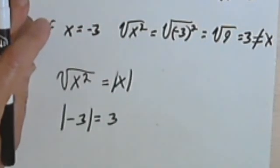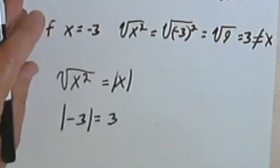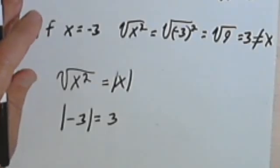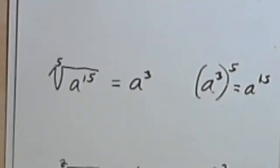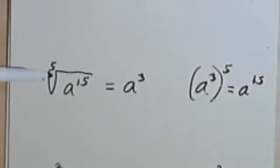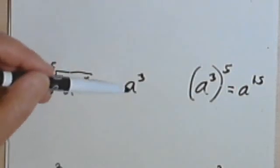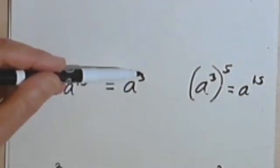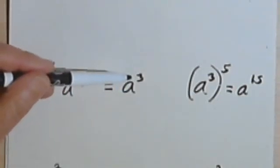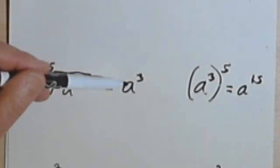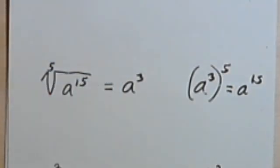Other than that, this stuff, like I said, is really simple. Let me just take a page here and review it. All you're doing is taking the index, dividing it into the exponent, and that's going to tell you the power that your variable is raised to when you take it outside of the radical sign. And that's all there is to it. Take care. See you next time.